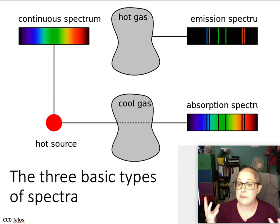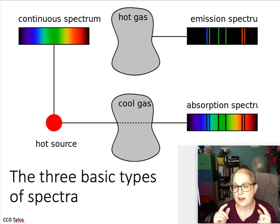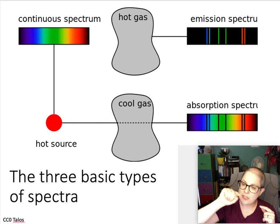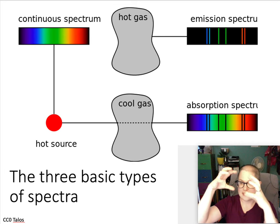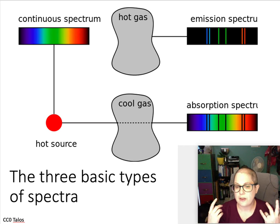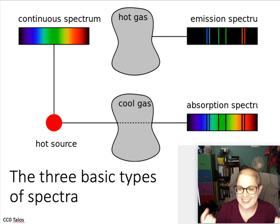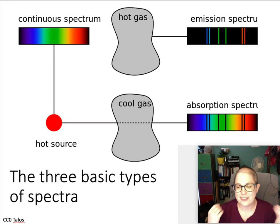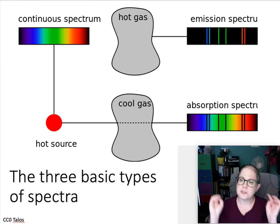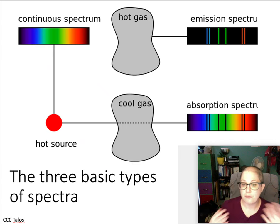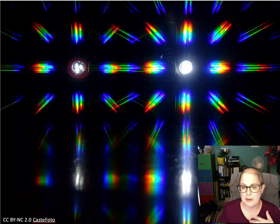You can see all three types together: a hot source gives you a continuum; hot source light going through a gas gives you an absorption spectrum. If you look at a gas cloud from another angle so the hot source isn't behind it — the gas being the hotter thing — you'd see an emission spectrum. Notably, the bright lines in the emission spectrum line up with the dark lines in the absorption spectrum, telling us light is removed at specific wavelengths and re-emitted in other directions.